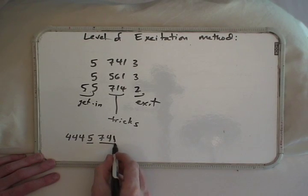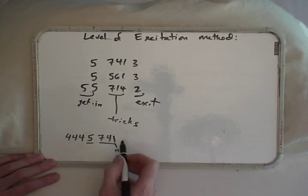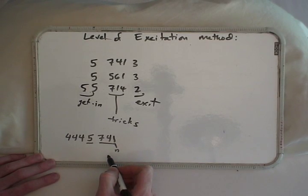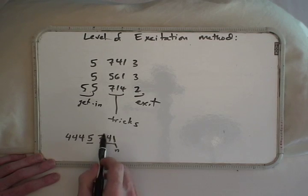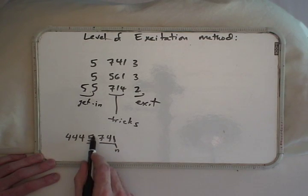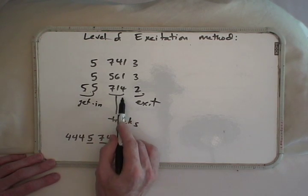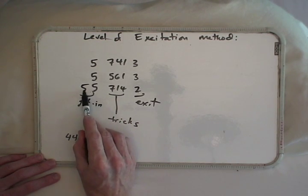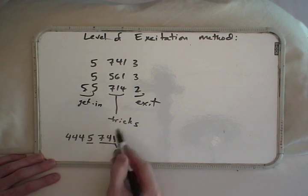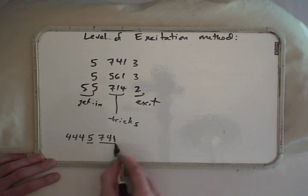Then we can repeat that any number of times, including zero times if you like, but anyway we can repeat it any number of times. Where it leaves us in is an excitation level that is a single 5 excited. If we wanted to go into 714, we need 2 fives to get into 714 and 741 only has 1 five worth of excitation.